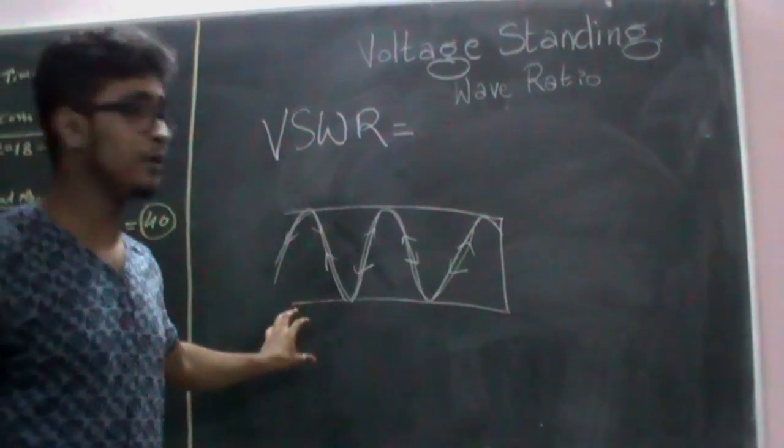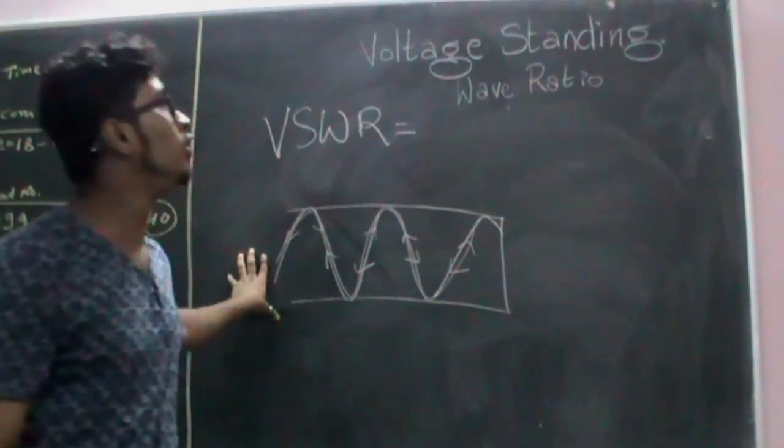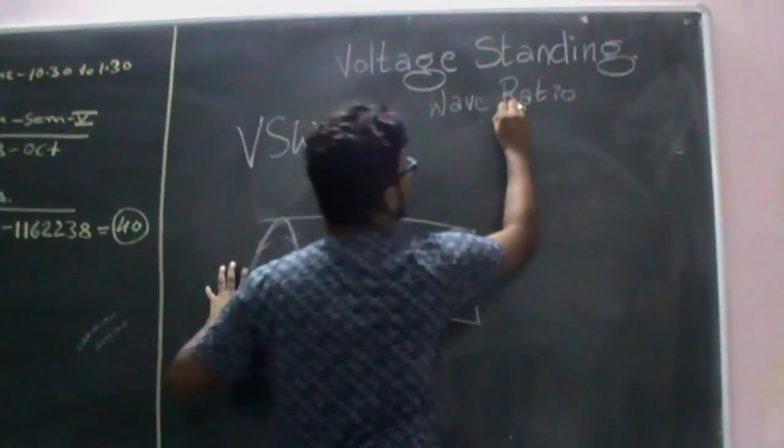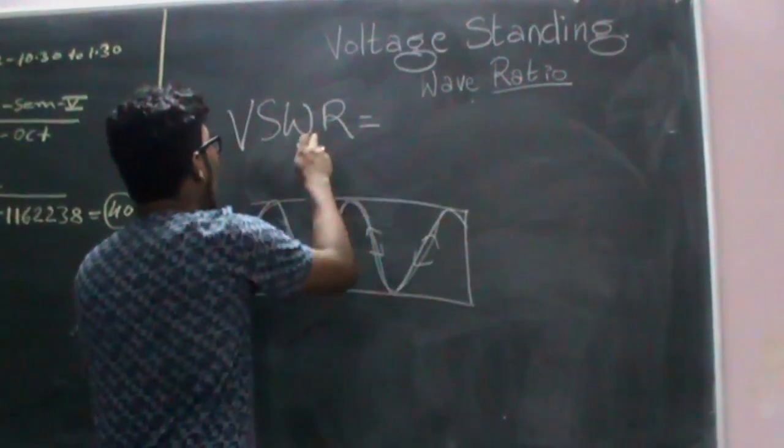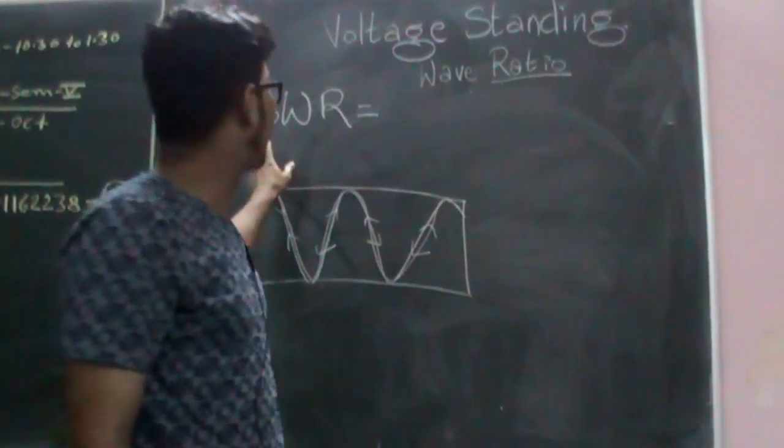So for an example, we can understand this is how voltage standing wave ratio looks like. But as the question says, how can we mathematically describe VSWR?